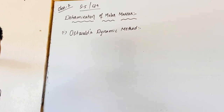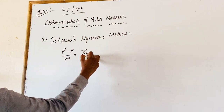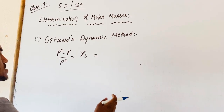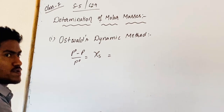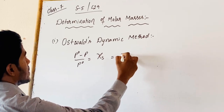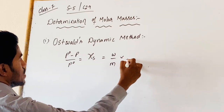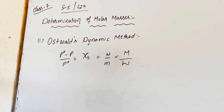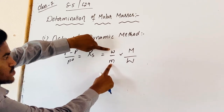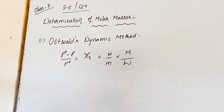Now, the relative lowering of vapor pressure is given as: P-naught minus P by P-naught equals chi, the mole fraction. Here, chi equals the number of moles of solute by total number of moles. For a dilute solution, the number of moles of solvent is very large compared to moles of solute. Then we can write: W represents the weight of solute, W by M into capital W by capital M.